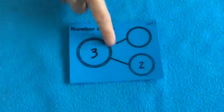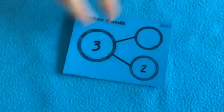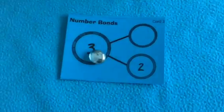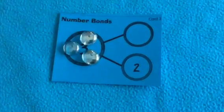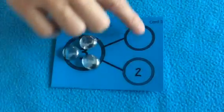We're going to focus in on one at a time. This one has a number that I'm starting with, the number three, so I'm going to put three gems and then I need to break it into part, part.